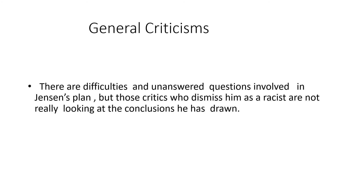Some general criticisms of Jensen's theory are: his theory was not complete because he could not prove that Level 2 ability is more prevalent in white people than in other races. His theory is considered to be based on racism and he is regarded as a racist. These are some of the general criticisms of Jensen's theory.